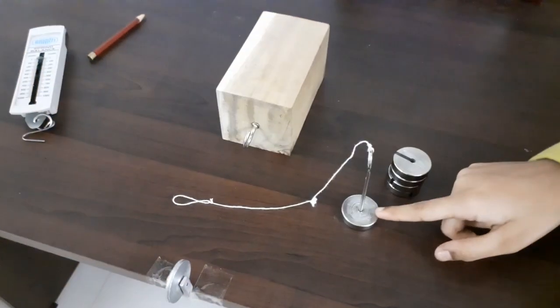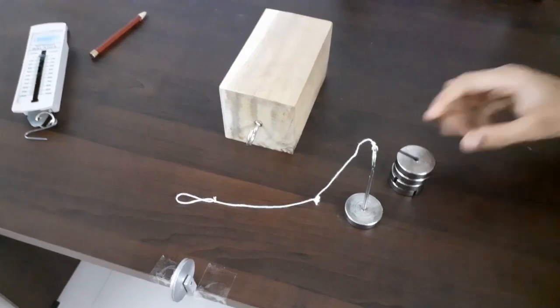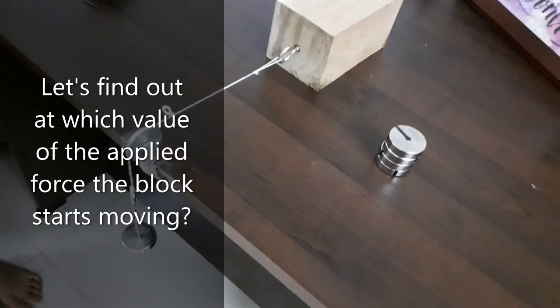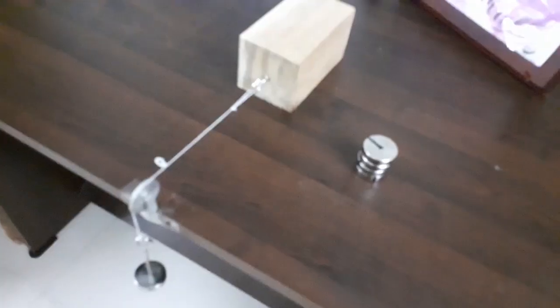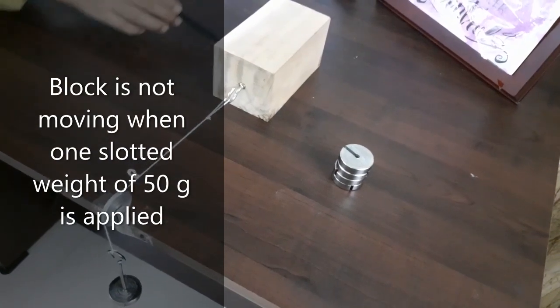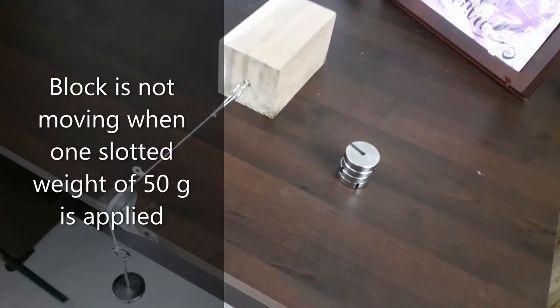Here, I have a weight of 50 grams and some slotted weights of 50 grams. Now we have placed the 50 gram as our applied force. Observe that the block is not moving, which means the frictional force is more than the applied force.